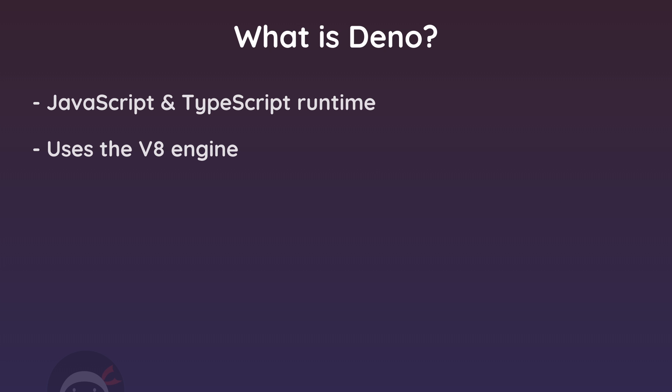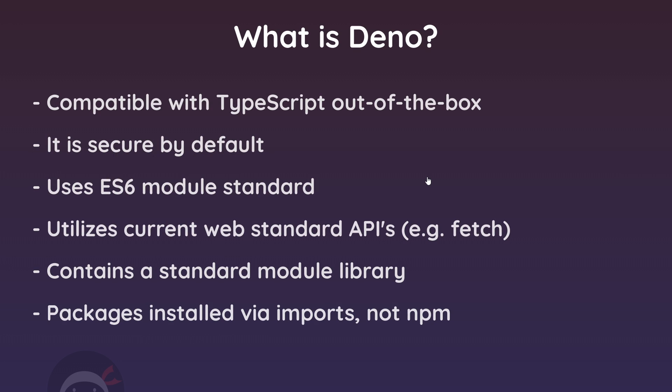We're still going to be using Dino to do all of the same kinds of things we currently use Node to do, but there are some noticeable differences and what seem to be possible improvements. First of all, it works with TypeScript out of the box. There is a compiler built into Dino and there's no need for any further setup or tooling. Dino processes our TypeScript for us automatically into JavaScript, which is great and we're going to see that later on.